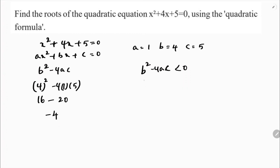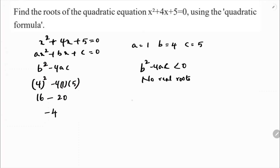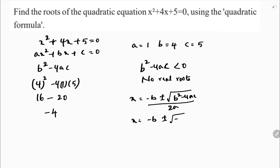Since b squared minus 4ac is less than 0, we will not get real roots — no real roots. If you apply the formula, x equals minus b plus or minus square root of b squared minus 4ac divided by 2a, you get minus b plus or minus the square root of negative 4.